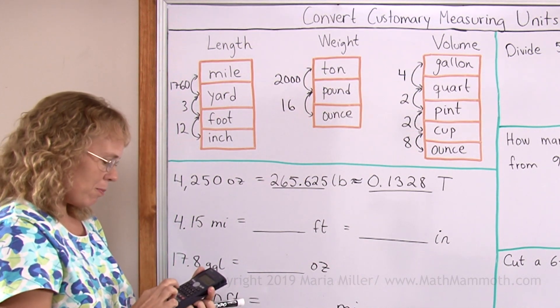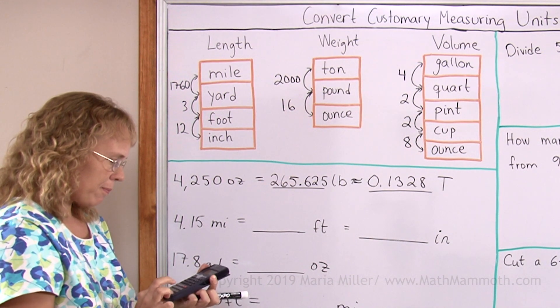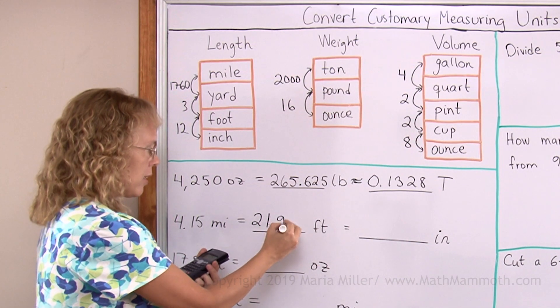So I will multiply 4.15 times 5280. And we will get 21,912.